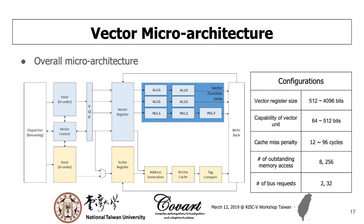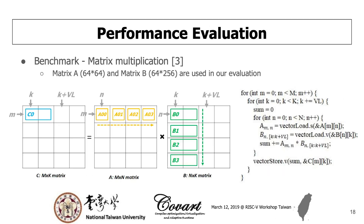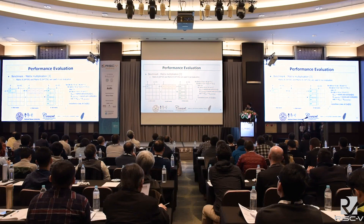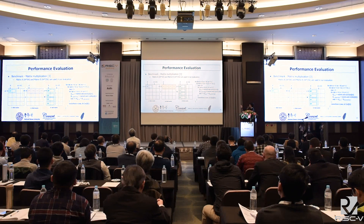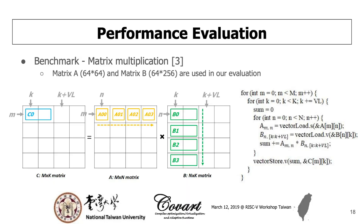Here is our overall microarchitecture. On the right side are the configurations we are going to evaluate, including vector register size, vector unit capability, cache miss penalty, and MSHR resources. The benchmark we use is matrix multiplication. Matrix A has size 64×64 and matrix B has size 64×256. In the innermost loop, we multiply a scalar in matrix A by a vector in matrix B, accumulating the result in a register that stores the partial sum. After the innermost loop ends, in the outer loop we store the partial sum back to the corresponding address of matrix C.